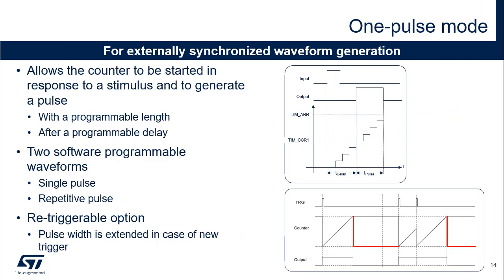One pulse mode is used to generate a pulse of a programmable length in response to an external event. The pulse can start as soon as the input trigger is detected or after a programmable delay. The compare 1 register or CCR1 value defines the pulse start time, while the auto reload register or ARR value defines the end of pulse. One pulse mode also offers a retriggerable option — a new trigger arriving before the end of the pulse will cause the counter to be reset and the pulse width to be extended accordingly. Only timers 1 and 3 support the retriggerable 1 pulse mode in the STM32C0.